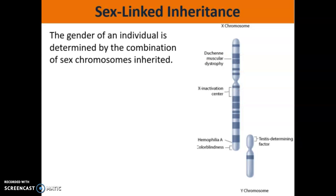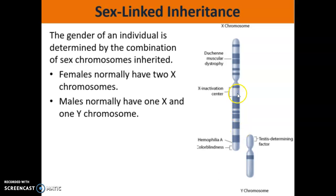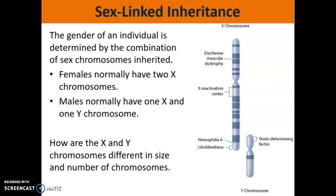What determines if you're a male or a female is what type of sex chromosomes you have. Here we have pictures of the X chromosome and the Y chromosome. If you're a female, you're going to have two copies of this larger X chromosome. If you're a male, you're going to have one large X chromosome and one smaller Y chromosome. The X chromosome is definitely much larger in size, and it also contains a lot more genes and a lot more traits than the Y chromosome.